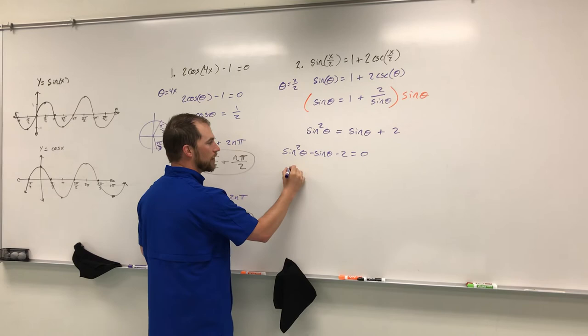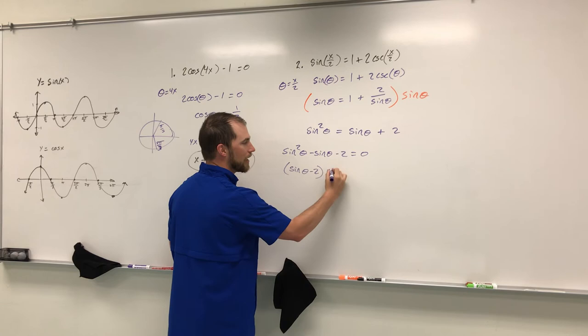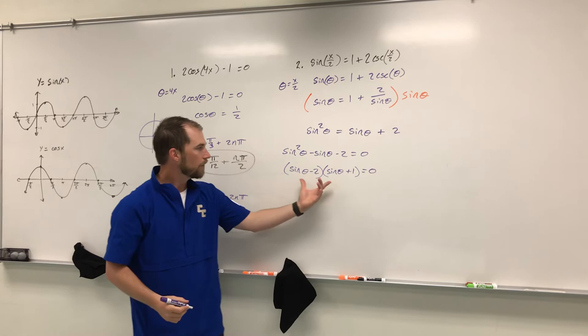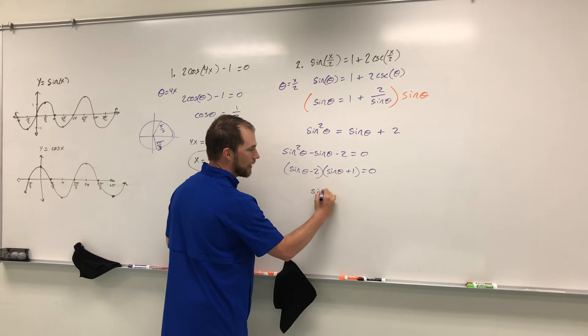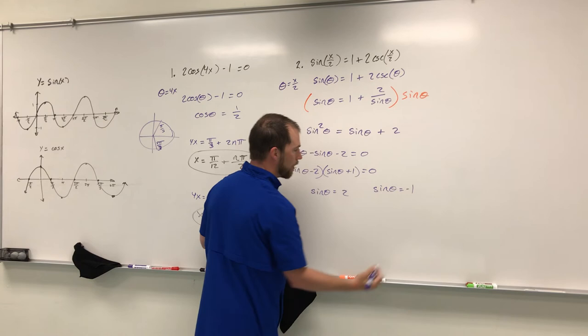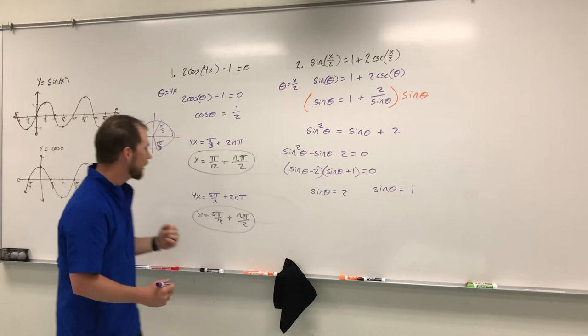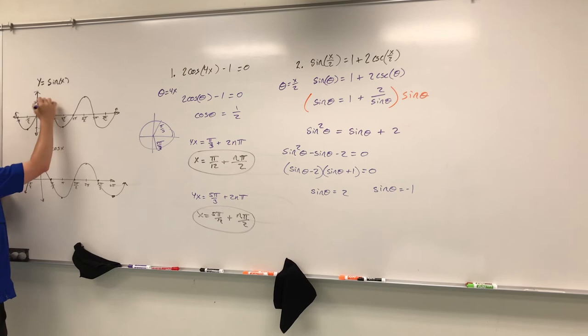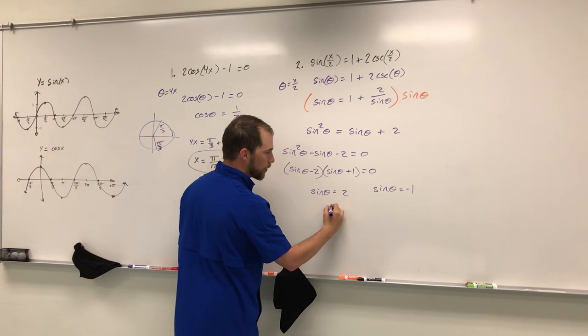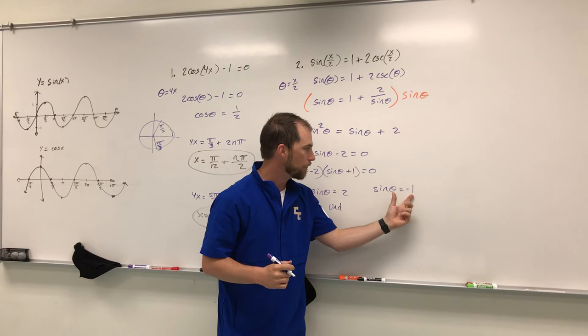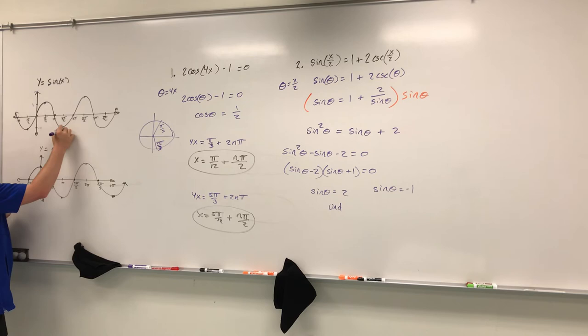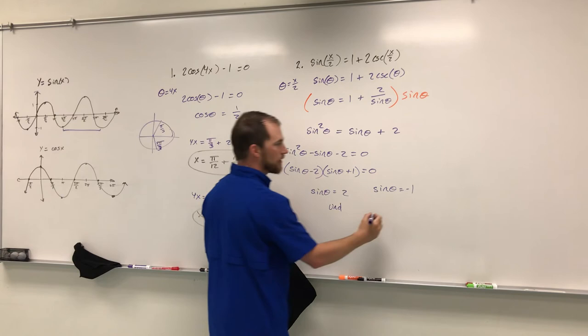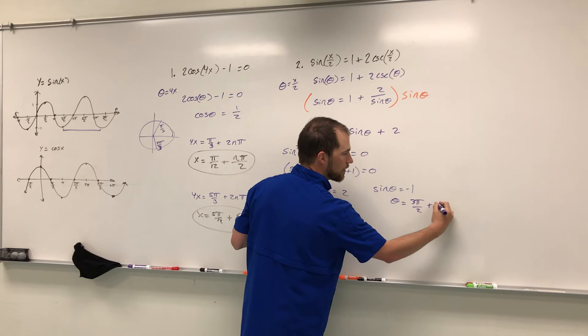This looks like a simple factoring problem. We need factors of 2 with a difference of 1, so that's 2 and 1. Factoring gives (sine theta minus 2)(sine theta plus 1) equals 0. Setting each factor equal to zero: sine theta equals 2, which is outside the range of sine (maximum is 1), so this is undefined. Sine theta equals negative 1 gives theta equals 3 pi over 2.